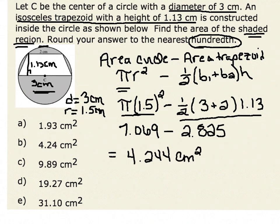Notice that we need to round to the nearest hundredth, which is our second decimal place. Therefore, rounded to the nearest hundredth, our area of the shaded region is 4.24 centimeters squared.